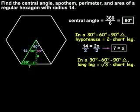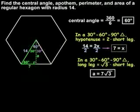And remember that in a 30, 60, 90 degree triangle, the long leg is root 3 times the short leg, so a, which represents the apothem, is 7 root 3.